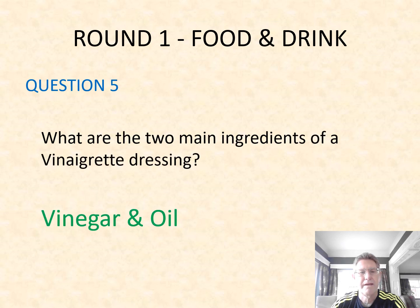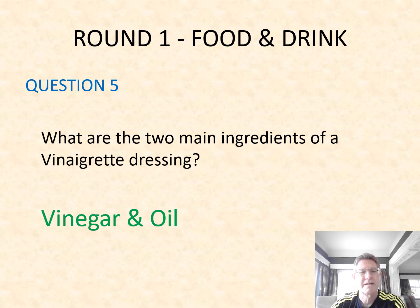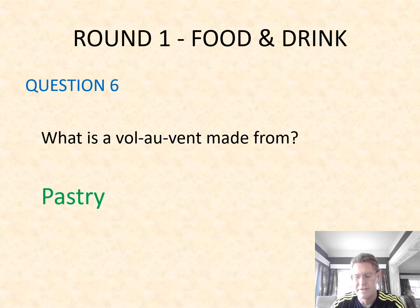Number five: what are the two main ingredients of a vinaigrette dressing? You only get one point for this, so you need both. It is vinegar and oil — those are the two main ingredients. Question six: what is a vol-au-vent made from? It's made from pastry. You don't have to be specific on the pastry, just as long as you put pastry.